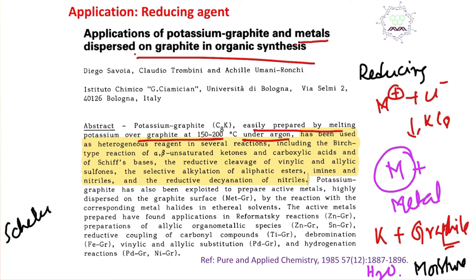It is a Schlenk line setup. In the second step, it has been used as a heterogeneous reagent. Why heterogeneous? Because graphite is not soluble in organic medium, so potassium graphite is also insoluble. It's heterogeneous.